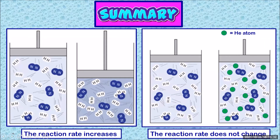So in summary, increasing gas pressure by decreasing the volume does increase the rate of reaction, because there are more collisions and a statistical increase in effective collisions. However, increasing gas pressure by adding an inert gas does not change the rate of reaction.